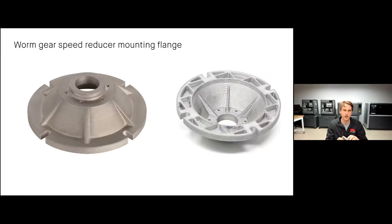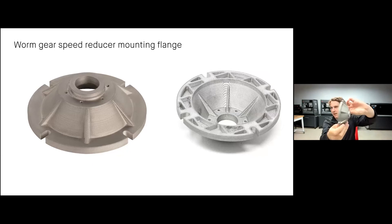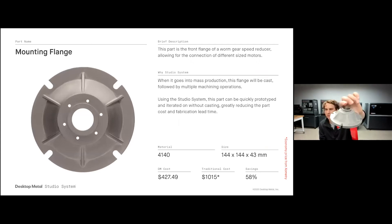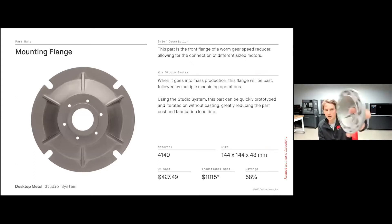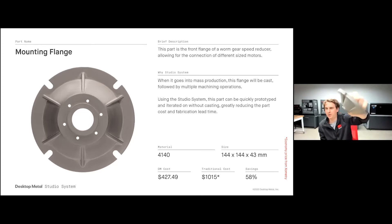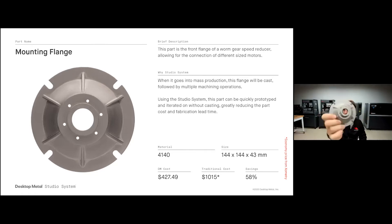A good example is this worm gear speed reducer mounting flange. This part will eventually be cast in high volumes, but during the prototyping stage it's beneficial to print this geometry on the Studio System. You may want to print a few different flanges of different sizes to test different motors and understand the best geometry for mass production. This part was printed in 4140 low-alloy steel — giving excellent hardness for different mounting scenarios — for just $427, compared to over a thousand dollars via CNC machining. In a couple of days you have your mounting flange ready to go.